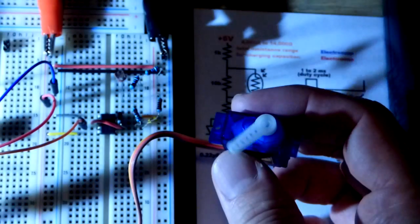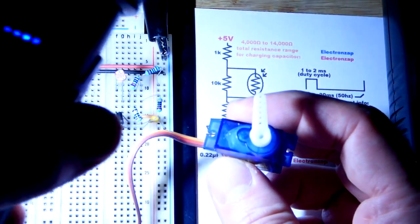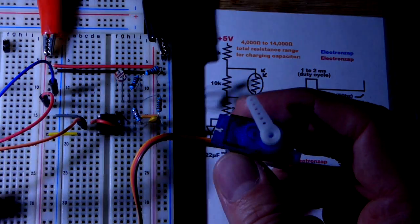So now in this video we have a servo whose position is determined by how much light is falling on the light dependent resistor, and we have a 555 timer which is sending the signal to the servo.